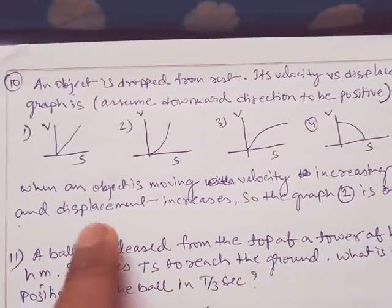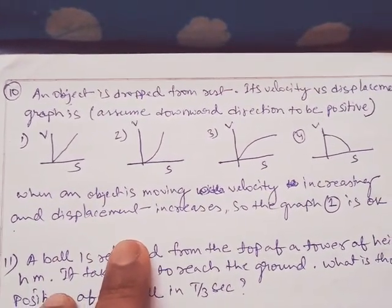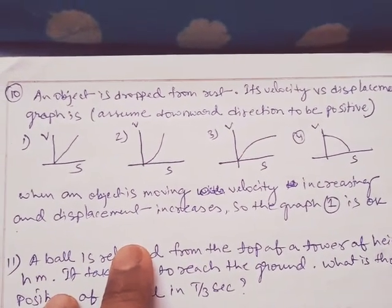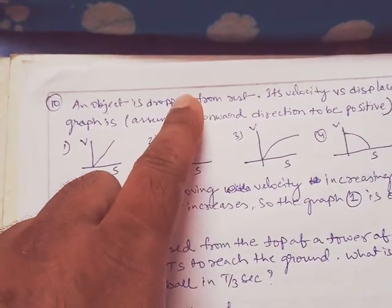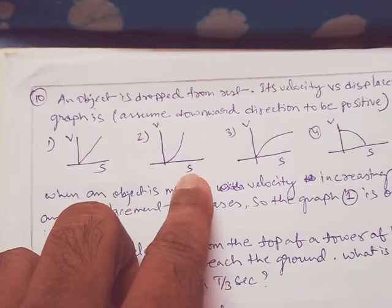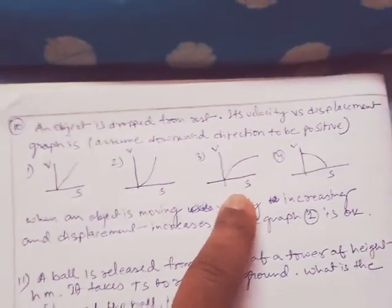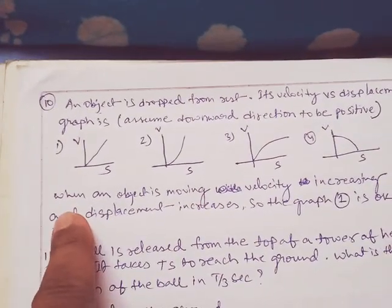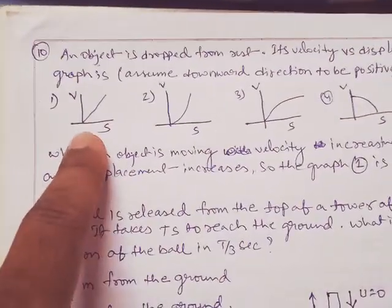Question number 10 mein dekho, velocity by time nahi hai distance hai, toh agar ek object upar se girega toh definitely uska speed toh increase hoga and displacement will also increase. Where this option is indicate that when the speed is too much high, this displacement will constant remain, ho nahi sakta hai. Here also impossible, dono match nikalh hai. So better I can say this one, and here it is totally opposite. This is okay.